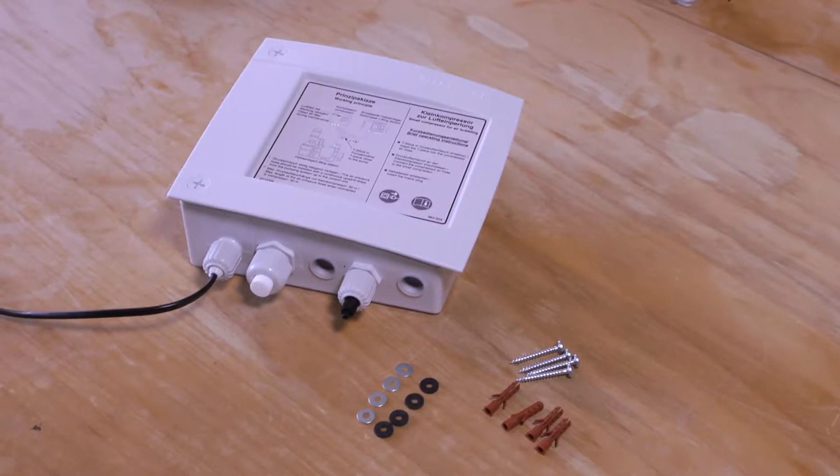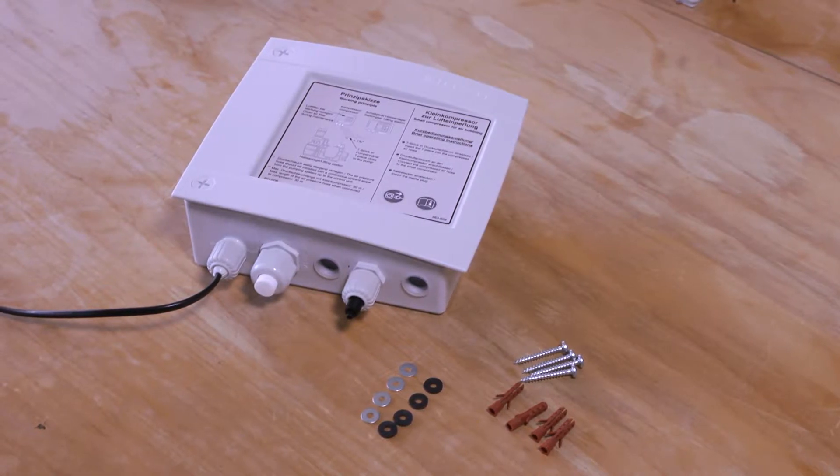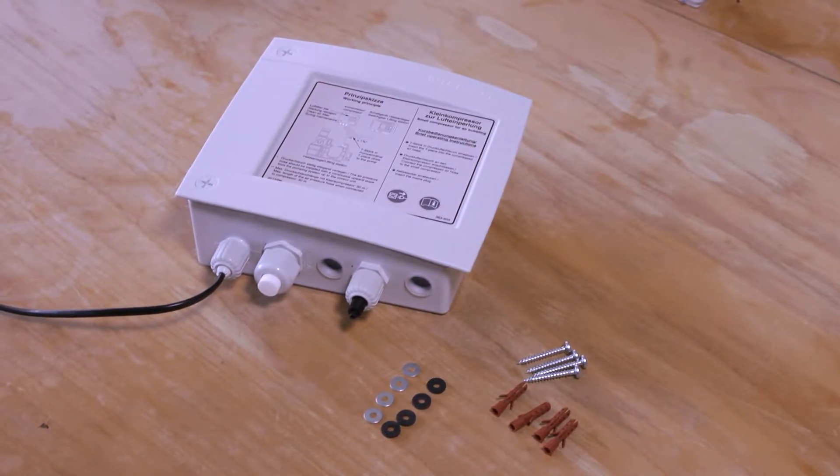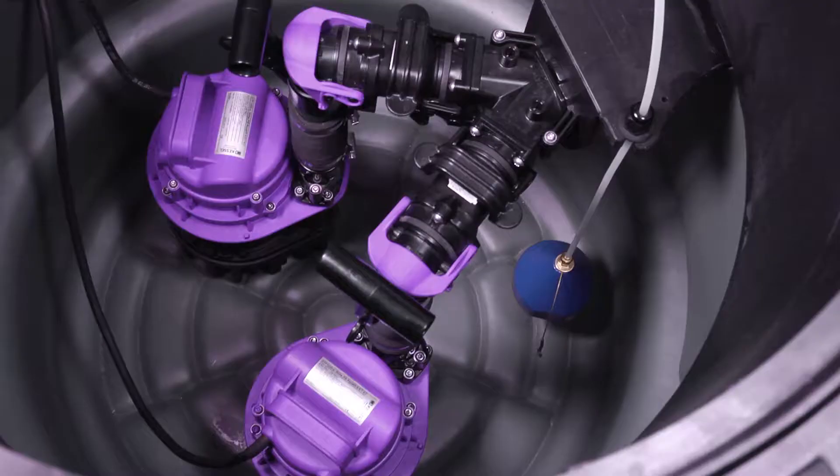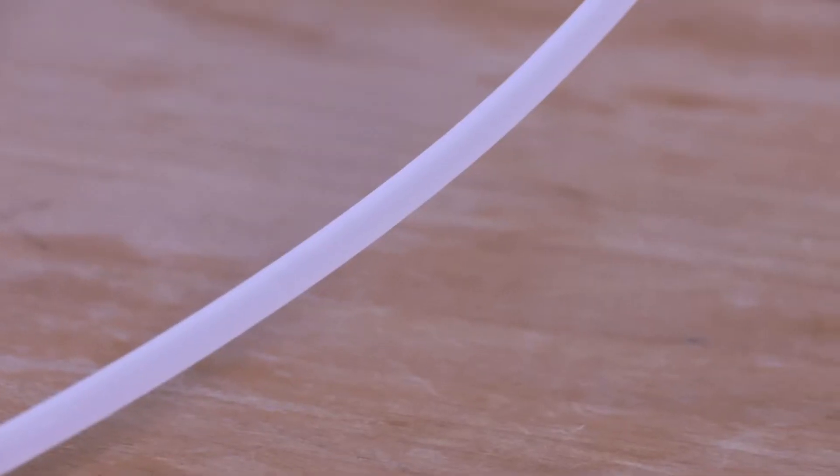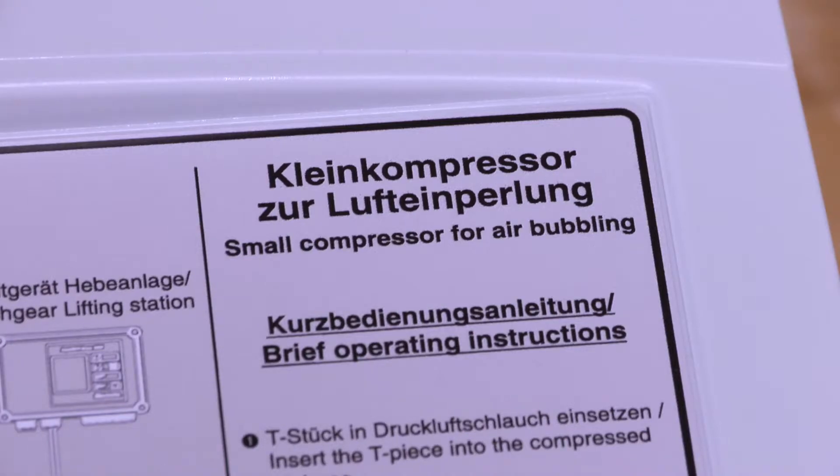The commissioning and use of the compressor for bubble formation is simple and can be carried out by a specialist in just a few minutes. The compressor prevents soiling and condensation in pressure hoses with lengths exceeding 10 meters for lifting stations and pump stations that are air pressure controlled.